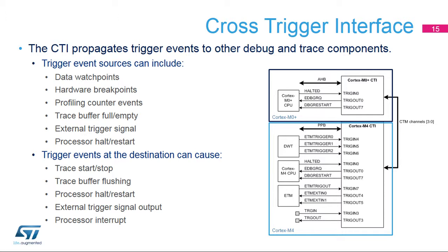The required trigger input signals (trig-in-n) and trigger output signals (trig-out-n) need to be connected to the Cross-Trigger Matrix, or CTM. The CTM comprises up to four channels, allowing four different events to be propagated in parallel. Trigger inputs can be combined in the CTI so that any one of the combined inputs will cause an event on the connected channel. Similarly, a channel can be connected to several trigger outputs, so that one event can trigger multiple actions.